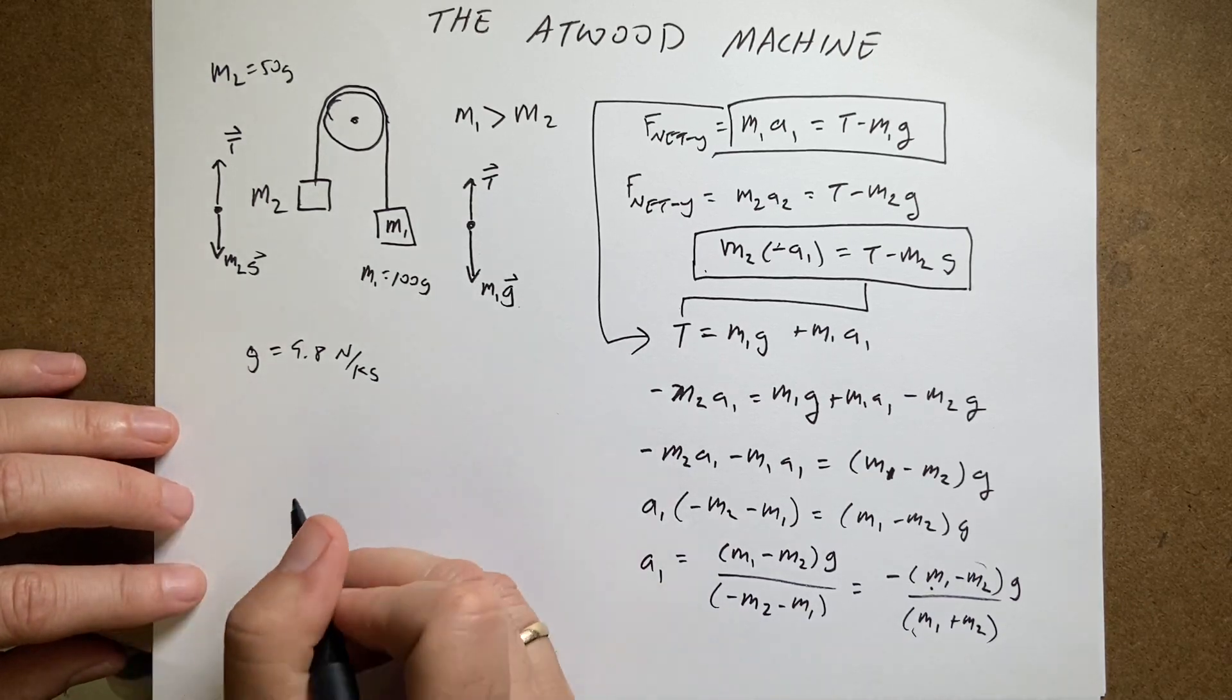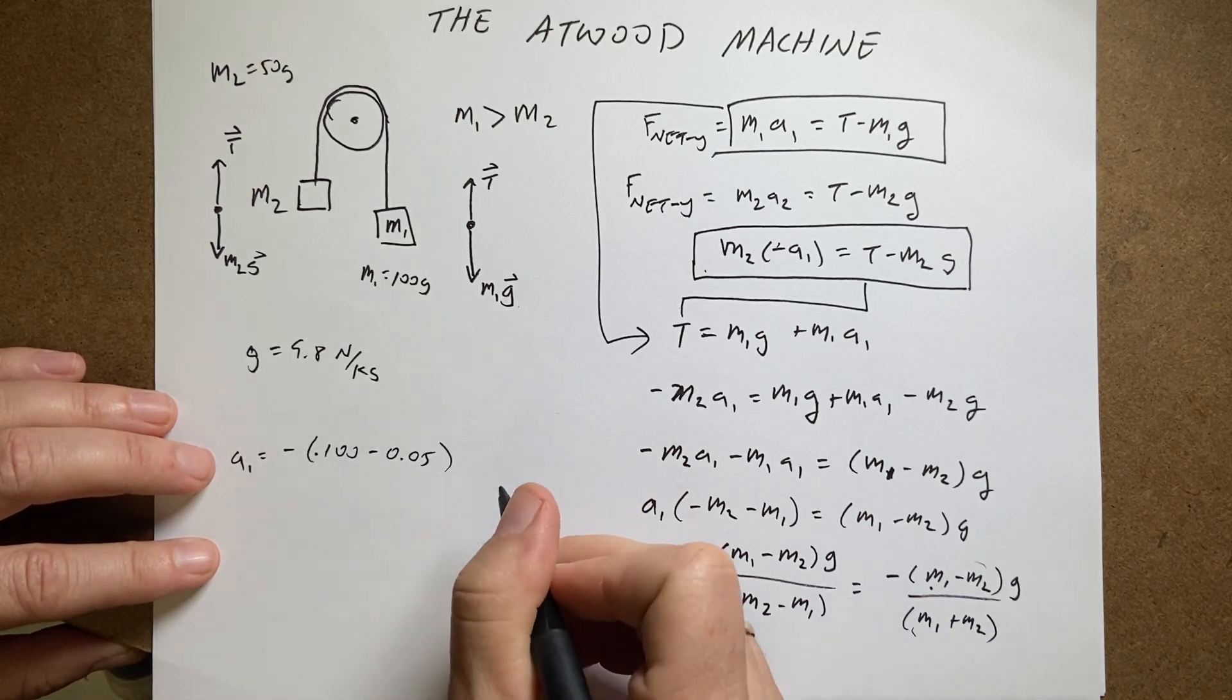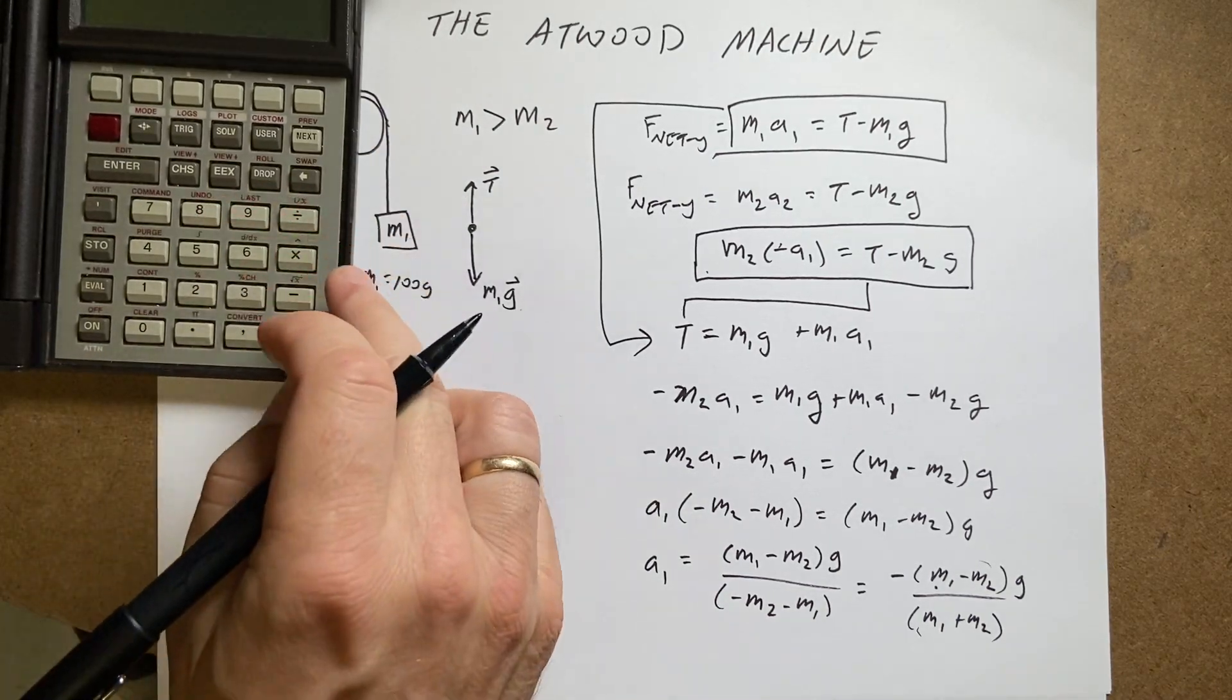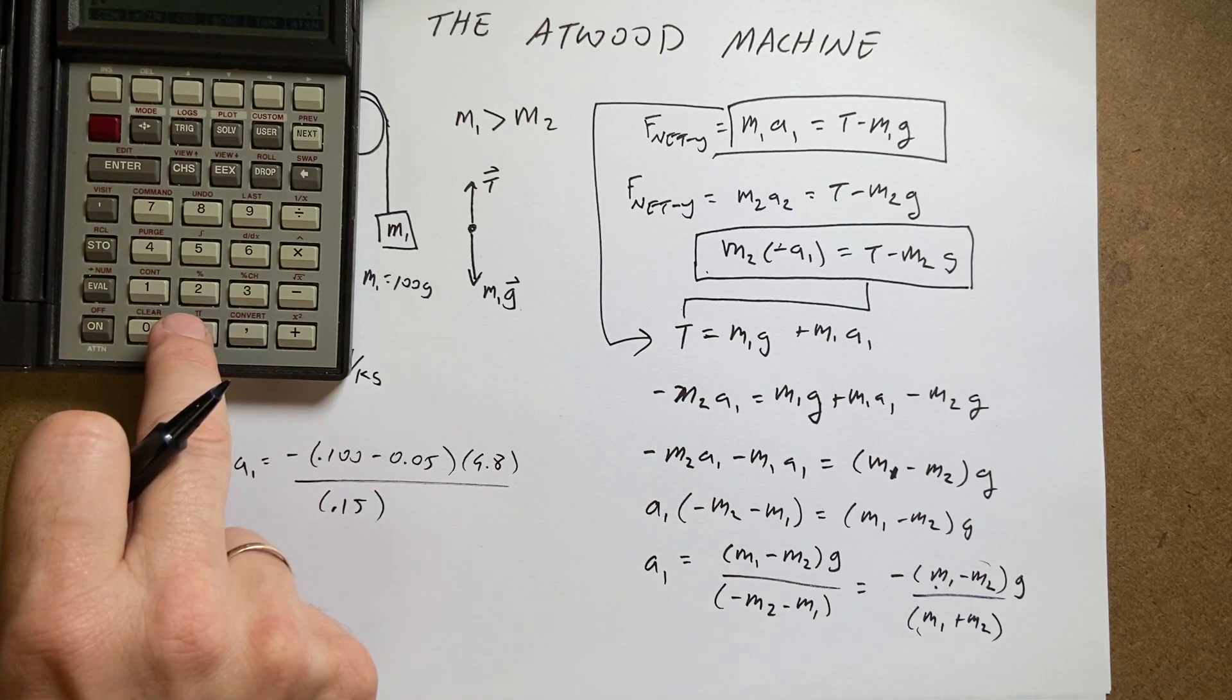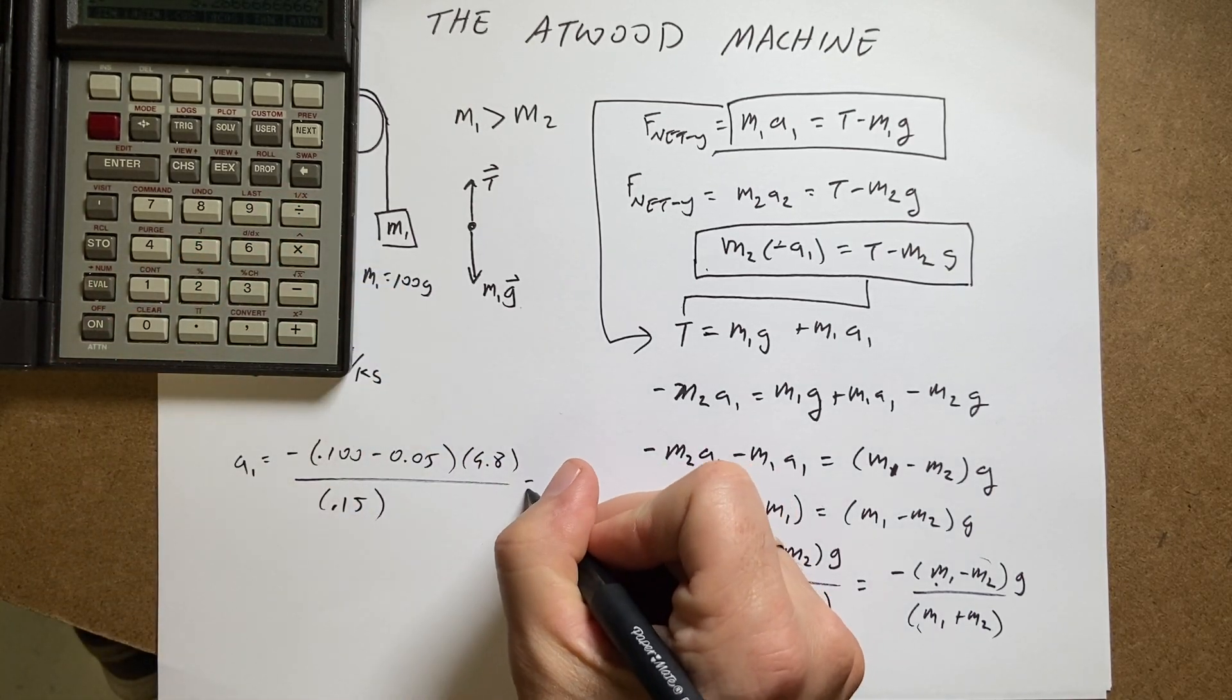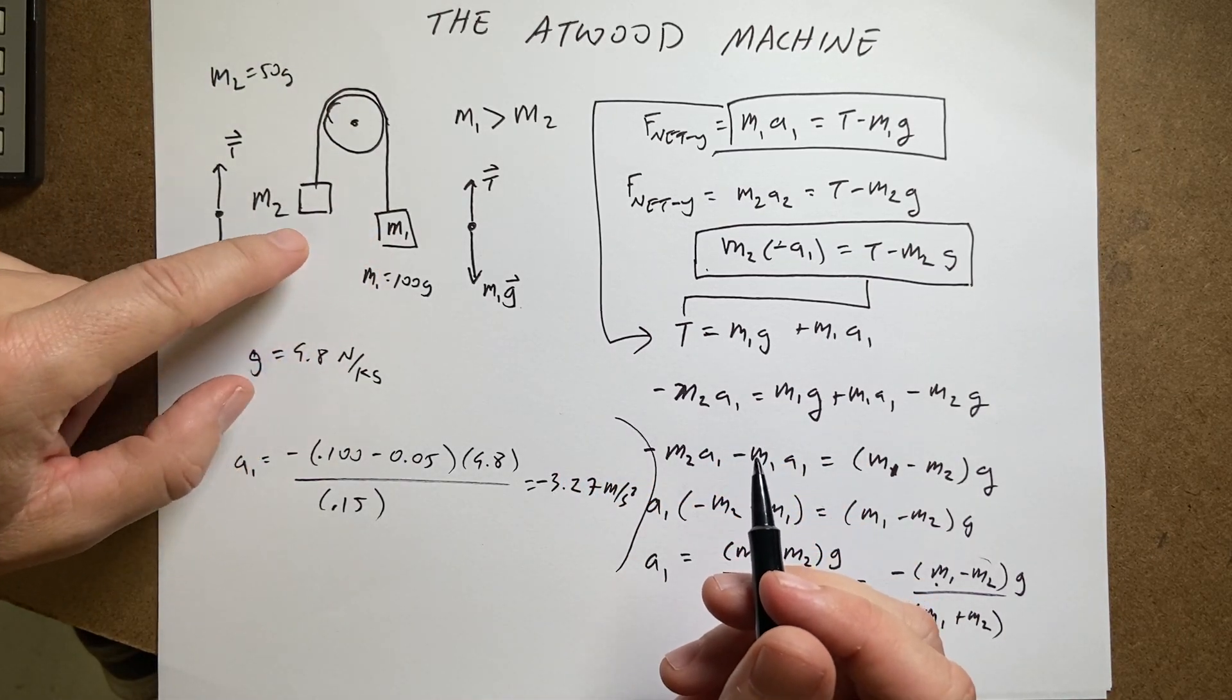Now let's put a value in because I said I would do that. So a1 is going to be equal to negative m1, 0.1 minus 0.05 kilograms times 9.8 over their sum, 0.1 plus 0.05, so 0.15. And I'll put that in my calculator just for fun. And I get 3.27 meters per second squared, negative. So that's the acceleration of this one, and now the other one accelerates up.